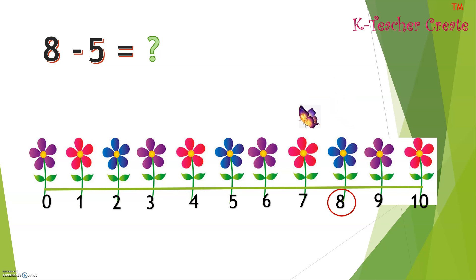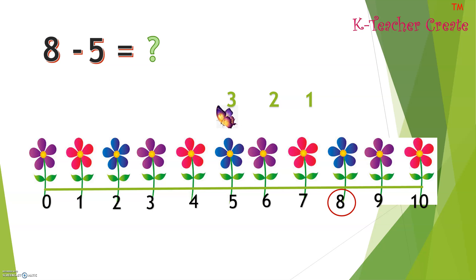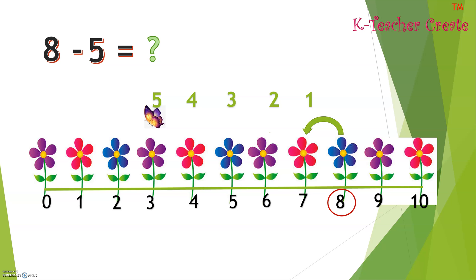From eight, we count backwards five times: one, two, three, four, five. Let's count backwards again: one, two, three, four, five. And the answer is three.